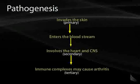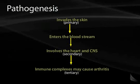The pathogenesis of Lyme disease: the tick invades your skin causing primary disease; Borrelia then enters the bloodstream and involves the heart and CNS, which is secondary Lyme disease. Tertiary Lyme disease is an immune complex disease that can cause arthritis, nerve deficits, and other problems.